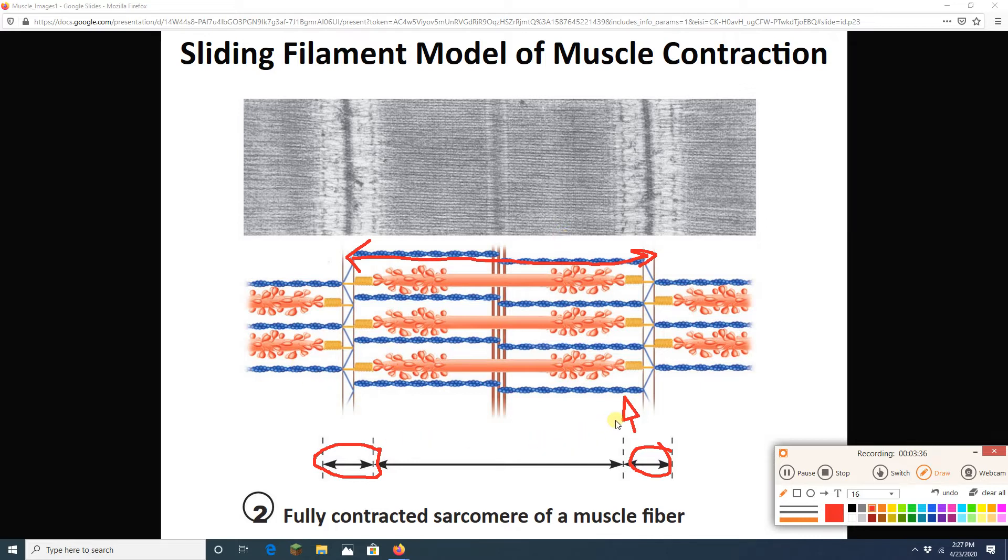There are going to be maybe millions of sarcomeres in a muscle cell. And they're all going to be doing the same thing. If this guy is contracting, they're all contracting.